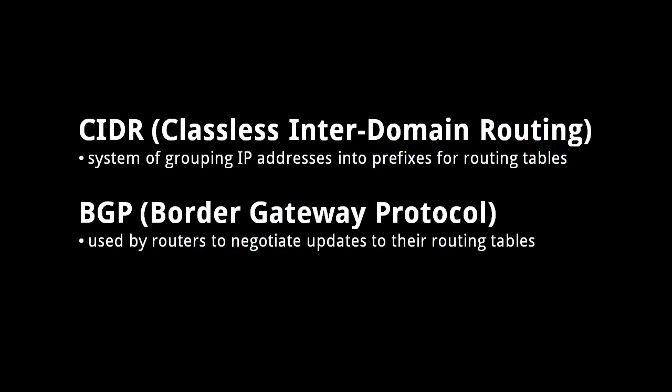When routing tables are not properly configured, packets might not find their way to their destination or might take less optimal routes. How exactly routing tables get configured is a complex topic we won't go into here. If you're interested in these details, you should read up on CIDR, classless inter-domain routing, and BGP, the border gateway protocol.